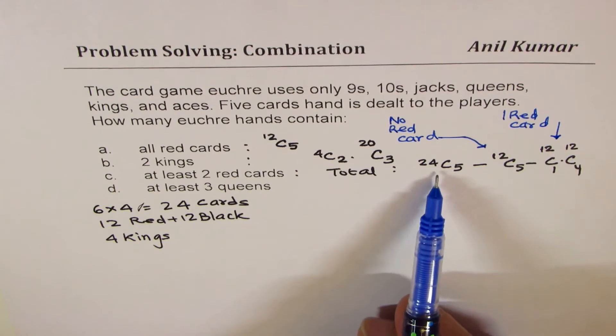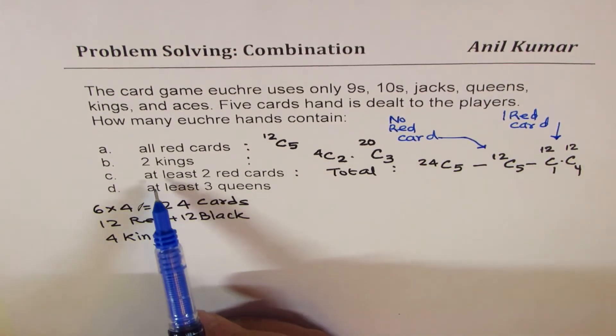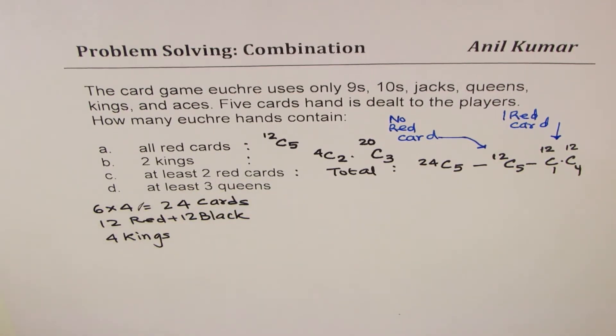So this combination gives you one red card. So from the total, if I take away these two, then I'm left with at least two red cards. Does it make sense? Is that clear? So that is how we should be doing it.